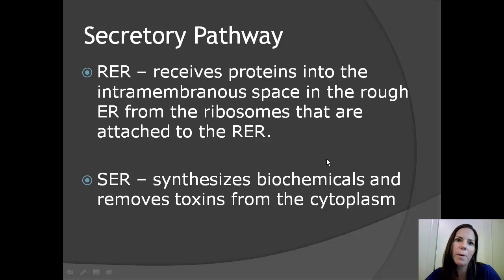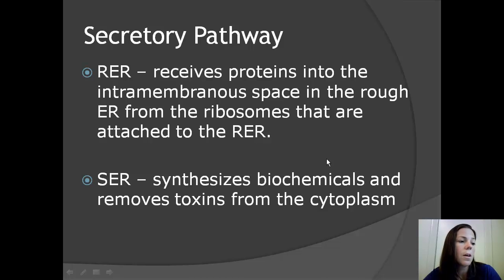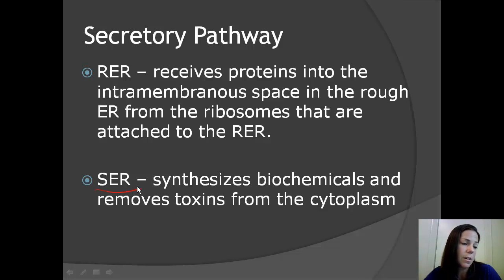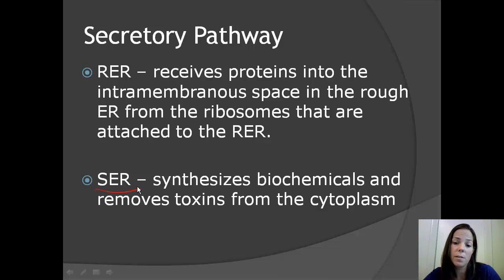The secretory pathway begins with the endoplasmic reticulum. The ER in the cell is similar to a transportation system in a city — it transports things to different areas. Ribosomes on the rough ER create or synthesize proteins, which then enter into the intramembranous space of the rough ER. The rough ER constantly needs to ship out these proteins to make space for incoming ones. The smooth ER contains enzymes needed to create biomolecules and also removes toxins from the cytoplasm. The smooth ER needs to ship out these biochemicals or toxins to make space for more to be created or for incoming toxins from the cytoplasm.